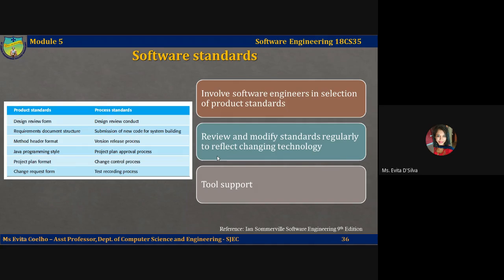Second, review and modify standards regularly to reflect changing technologies. Standards are expensive to develop and they tend to be enshrined in a company standards handbook. Because of the costs and discussion required, there is often a reluctance to change them. A standards handbook is essential, but it should evolve to reflect changing circumstances and technology.